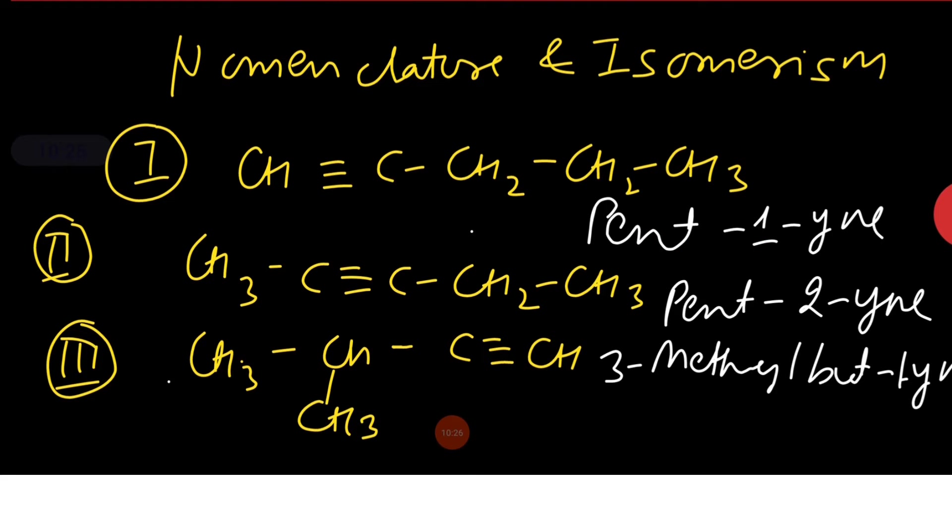The IUPAC name of first compound is pent-1-yne because numbering takes place from triple bond side. The second is pent-2-yne and the third compound is 3-methylbut-1-yne.